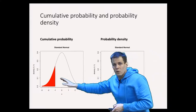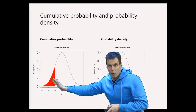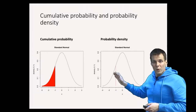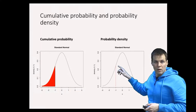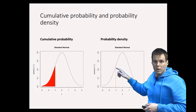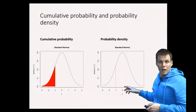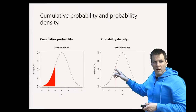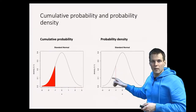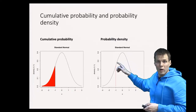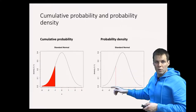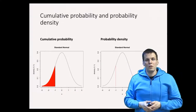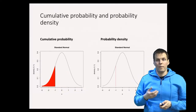Cumulative probability tells us what is the probability of getting a value or more extreme from the distribution, while probability density tells us the probability relative to others. This is not the probability of any particular exact value, because the normal distribution has an unlimited range, so getting an exact value is nearly impossible. Instead, it tells us the relative probability of getting this value compared to another — we are much more likely to get minus one than minus two, and more likely to get zero, the mean, than minus one.